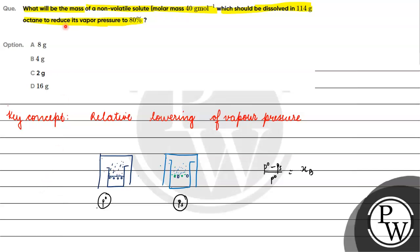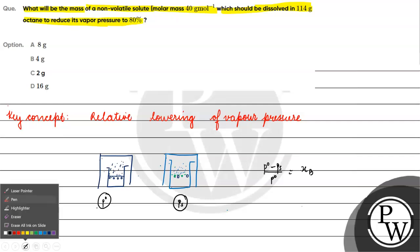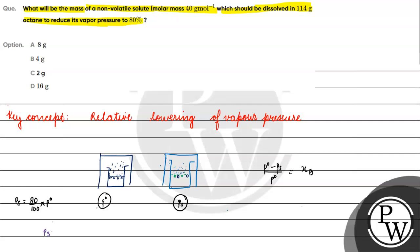Now, in this question, we have added a non-volatile solute with molar mass 40 gram per mole. The mass of solvent is 114 gram of octane. The vapor pressure is to be reduced to 80%, meaning ps will be equal to 0.8 times p0.